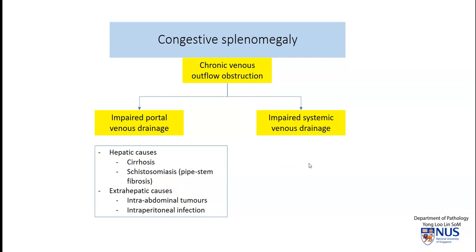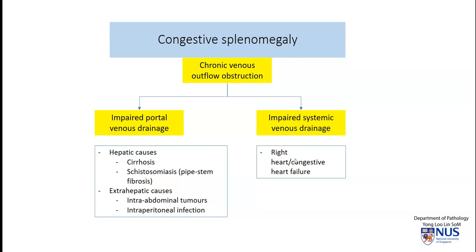In terms of systemic venous drainage, right heart failure or congestive heart failure — if you have a failing right ventricle secondary to left heart failure — this can also give rise to splenomegaly, but usually not to the extent of the very massive splenomegaly that is often associated more with impaired portal venous drainage.